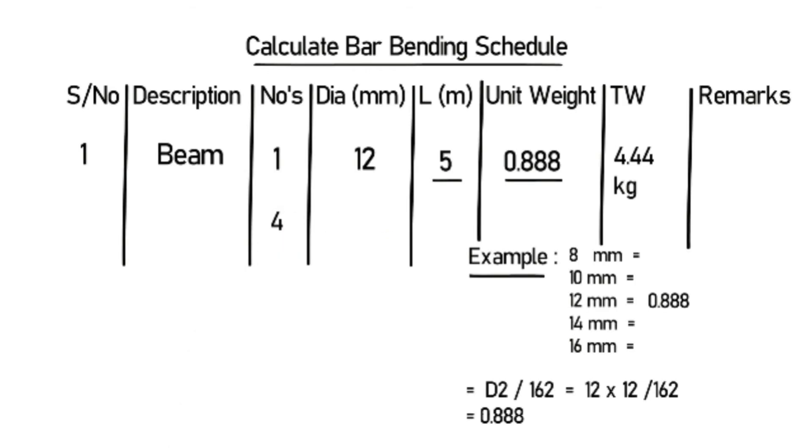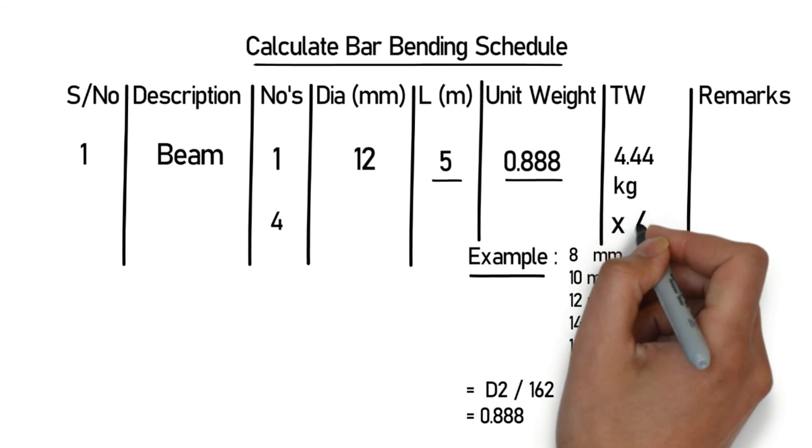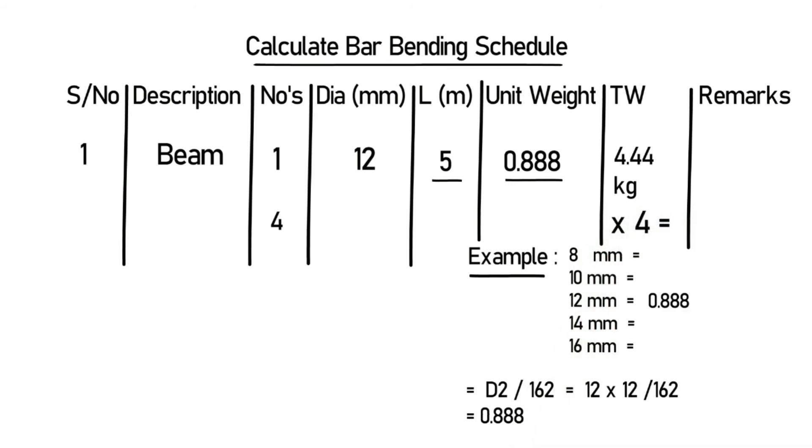If you want to find out the total weight for 4 number of beams, you write here 4. The numbers will be 4, and multiply the total weight by 4. This will give you the TW for 4 numbers of beam.